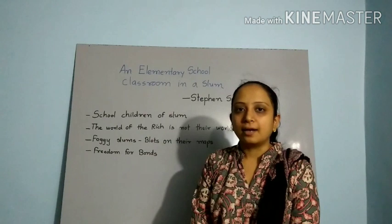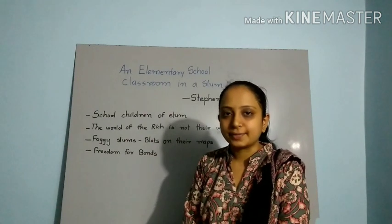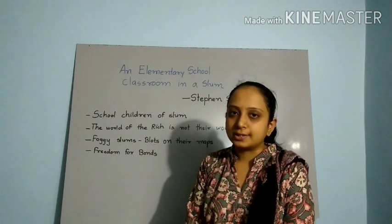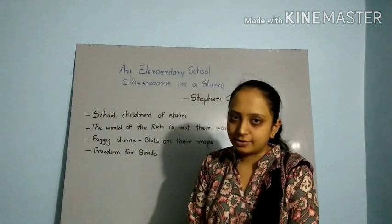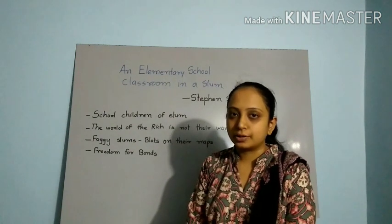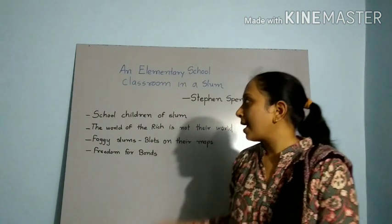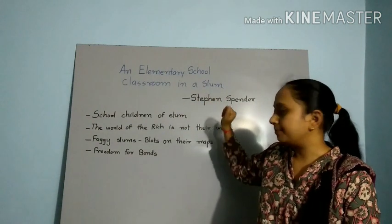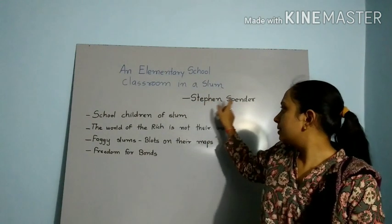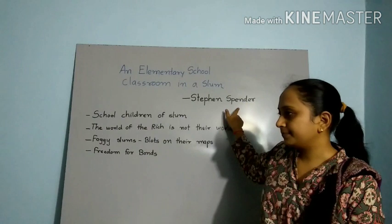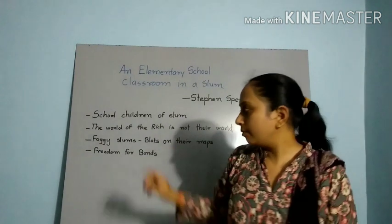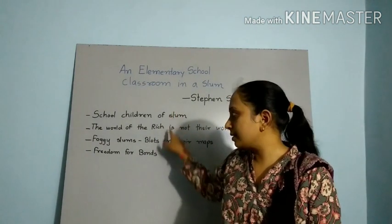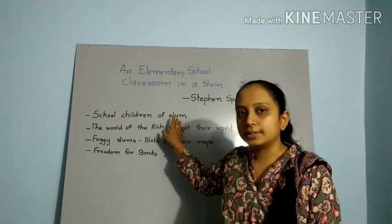Hello everyone, I hope you all are well. Today we have to start our English Literature. I have to take the second quiz on 'An Elementary School Classroom in a Slum' written by Stephen Spender. Here, four lines represent four stanzas and one line describes one stanza.